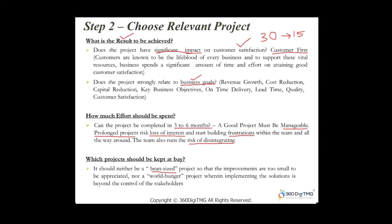What projects should be kept at bay? Do not do bean-sized projects — you can't complete a project in a week and call it a Six Sigma project. Probably lean concepts, Kaizen, or Blitz Kaizen should address those, since the improvements would be too small. Also, do not try to solve world hunger — don't say you're going to increase revenue of all departments or arrest attrition across all departments. That would be too cumbersome.